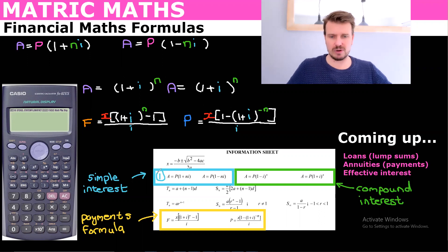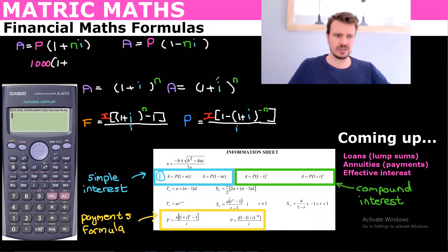So the first one, number one here, is the simple interest formula. Say you were given a thousand rand and you invested it for two years at 10% interest. Your n is the number of years, so that would be two. If it was 10% per year, you could either put 10% or you could put 0.1. I'm going to put 10% because you can put that on your calculator. We know that 10% of 1000 is 100, so this should give us 1200 when we put it into our calculator.